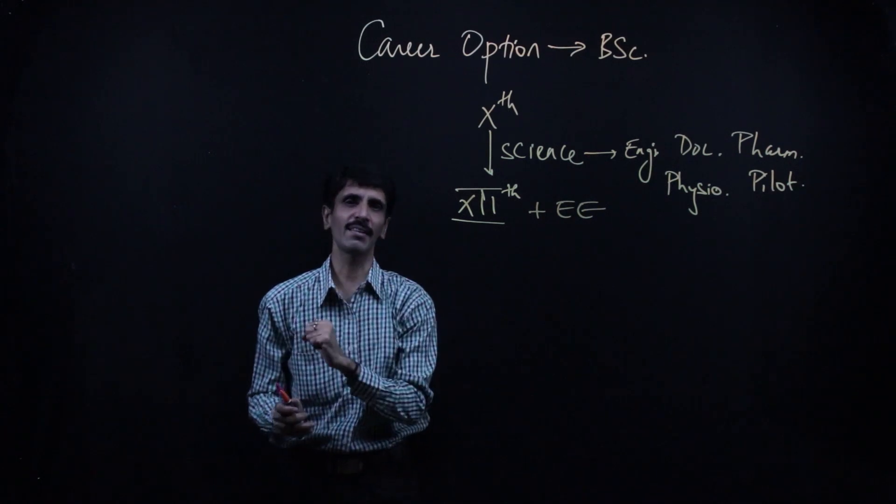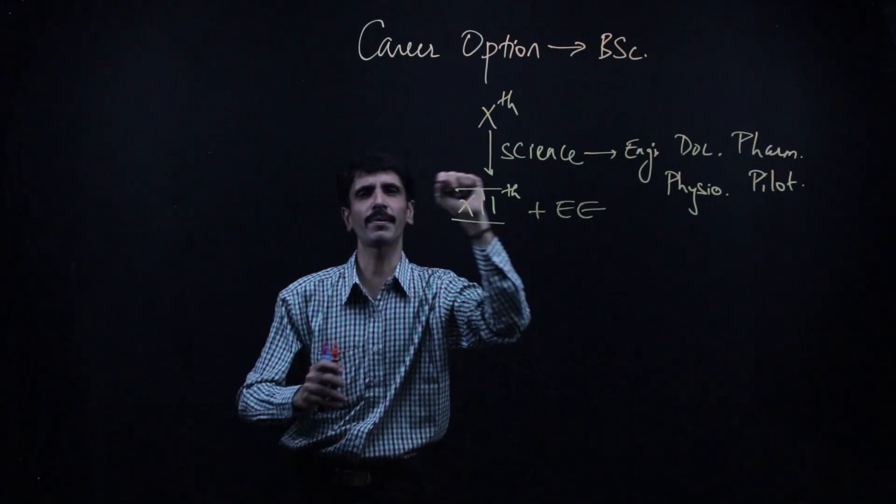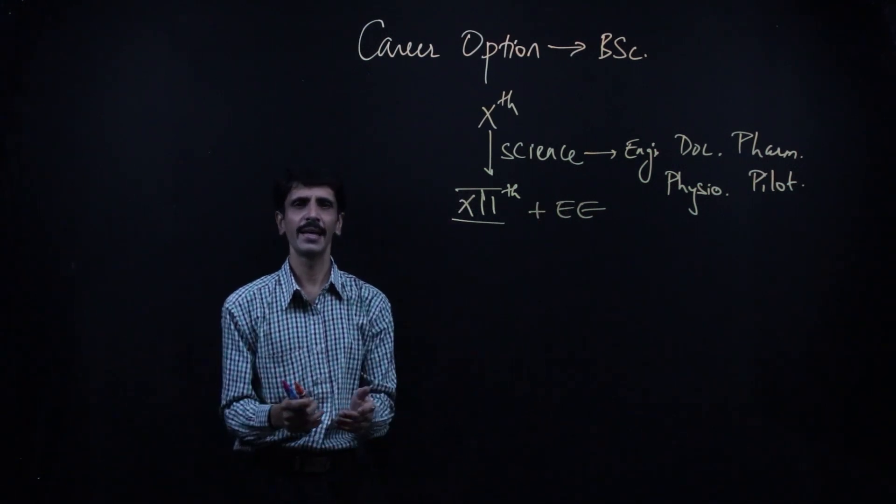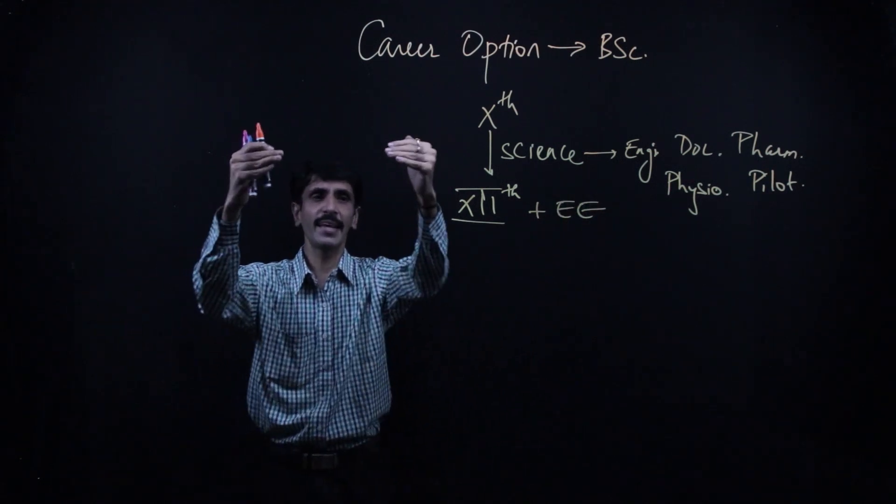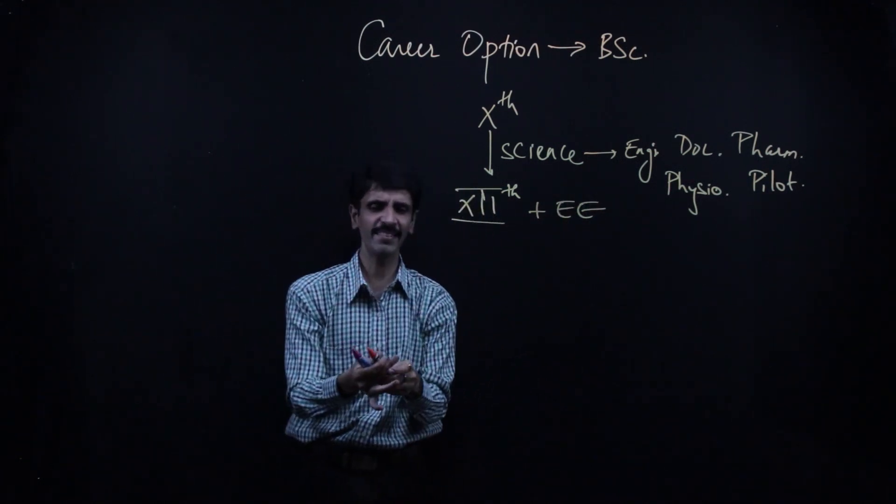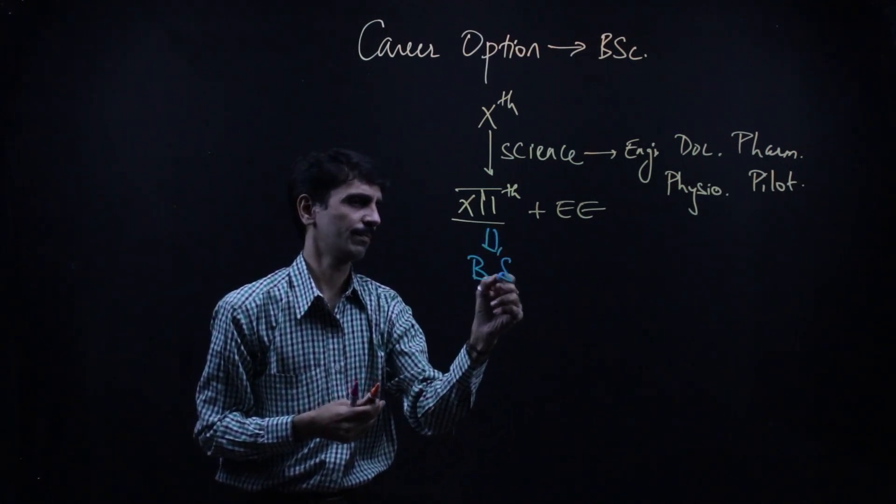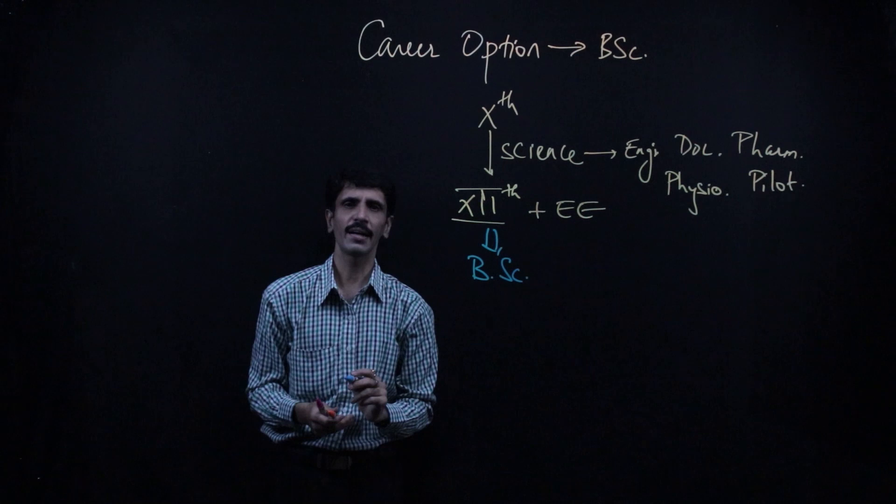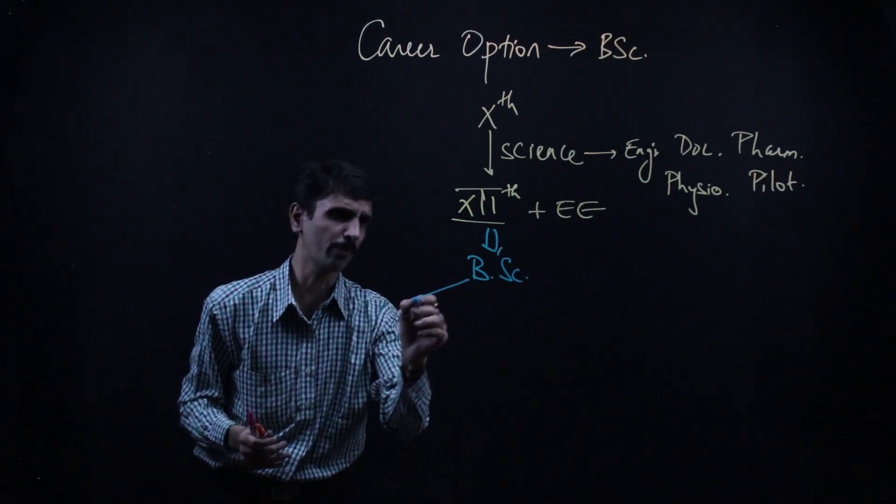Look at my idea of this. What is to be done? Is this the end of the road? No ways. The other option which comes out is going for B.Sc. Now when you talk about B.Sc., there are two types of B.Sc. courses.